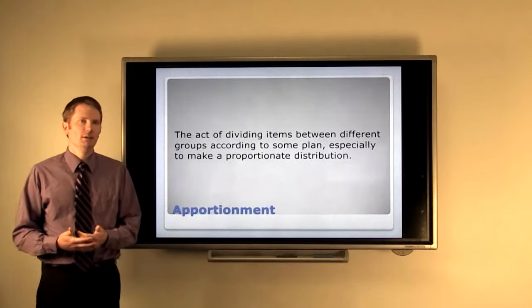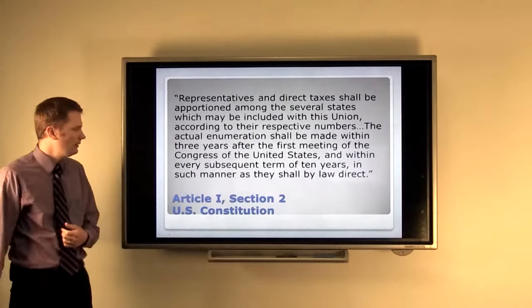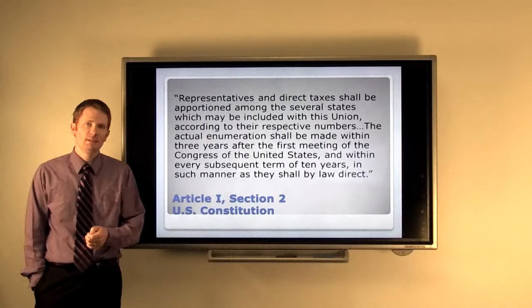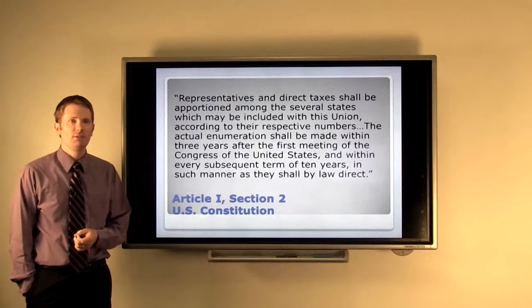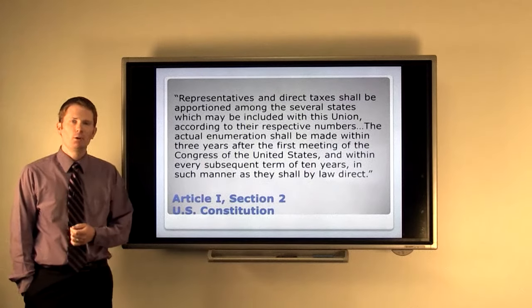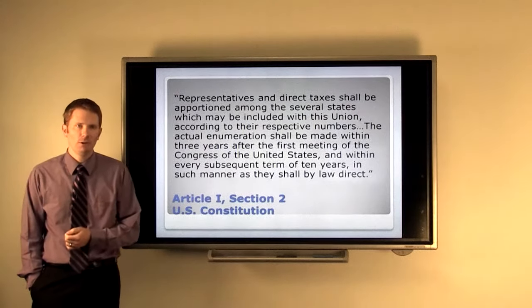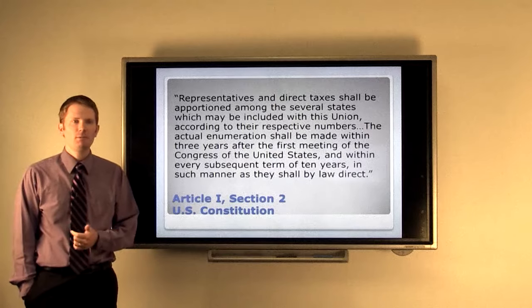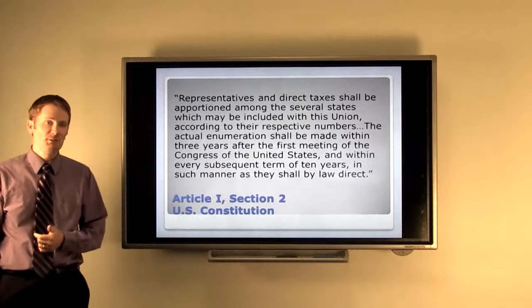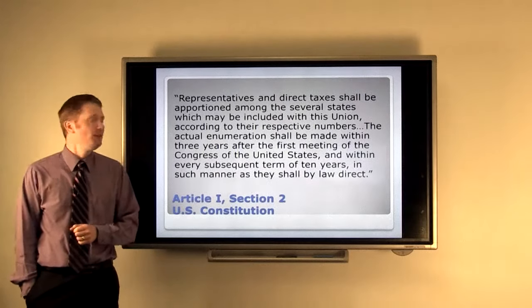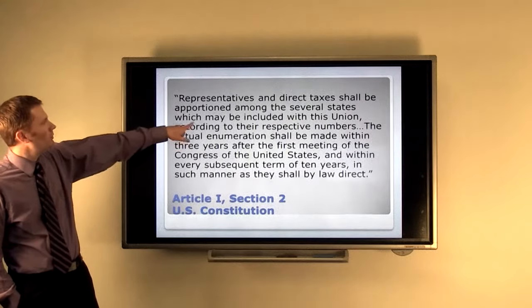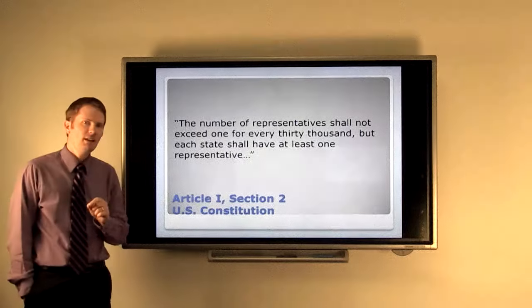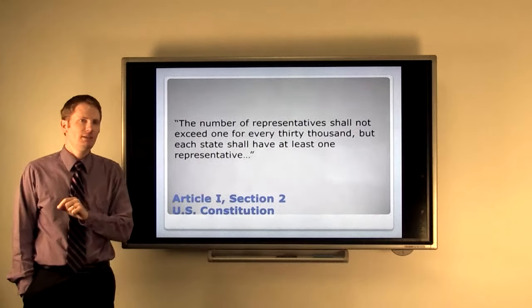And our country originally dealt with this in its founding. In our Constitution, Article 1, Section 2, we find these words: representatives and direct taxes shall be apportioned among the several states which may be included with this union according to their respective numbers. The actual enumeration shall be made within three years after the first meeting of the Congress of the United States, and within every subsequent term of ten years in such manner as they shall, by law, direct. The key is that we shall apportion representatives according to their respective numbers. Now, what the Constitution did not say is how we did that. They just said that we should do that.